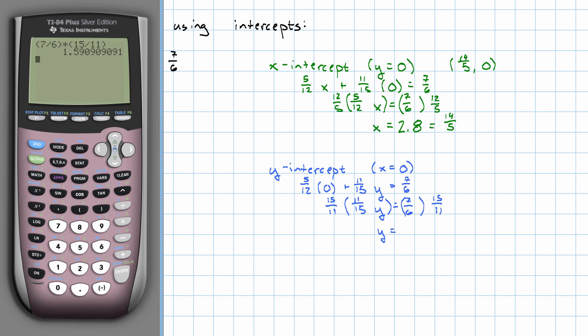It looks like 1.5 and then the pattern 9-0 repeating, ick. Make that a fraction, 35 twenty-seconds. Our y intercept is (0, 35 twenty-seconds).